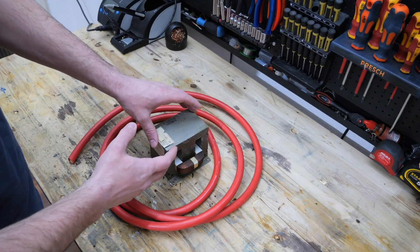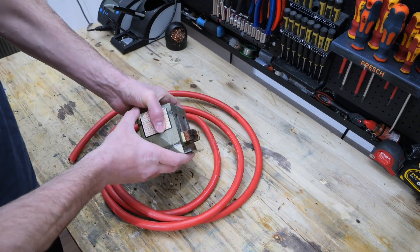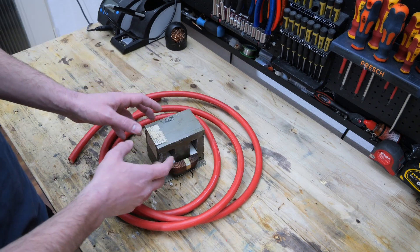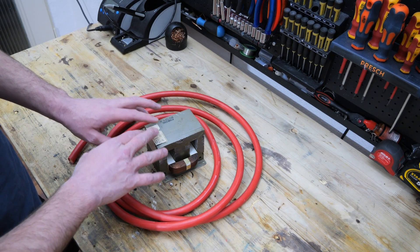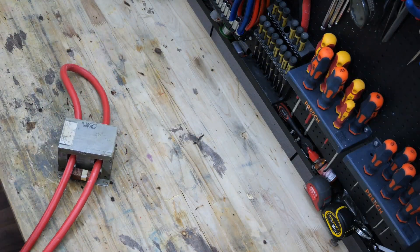In order to produce the high current needed for the thermal evaporation, I will be using a microwave oven transformer. With its original secondary coil, it produces about 2000 volts. So if you don't know what you're doing, don't mess with microwave oven transformers.